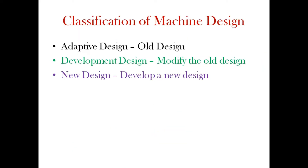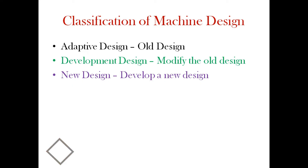There are three types of designs: adaptive design, development design, and new design. Adaptive design means using an old idea and an old design. For example, a motor company or pump manufacturer uses an existing design concept — that is adaptive design.